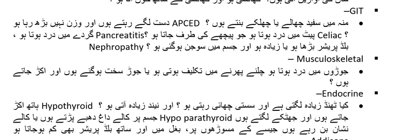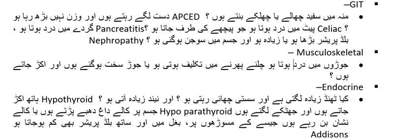Ask about kidney pain, increased or frequent urination, body swelling — diabetic nephropathy. Ask about joint pain, difficulty walking, joint stiffness and rigidity. For endocrine: increased cold sensitivity, sluggishness, increased sleep — hypothyroidism. Hand and foot spasms — hypoparathyroidism. Dark patches on the body, dark pigmentation in gums and armpits along with low blood pressure — Addison's disease.